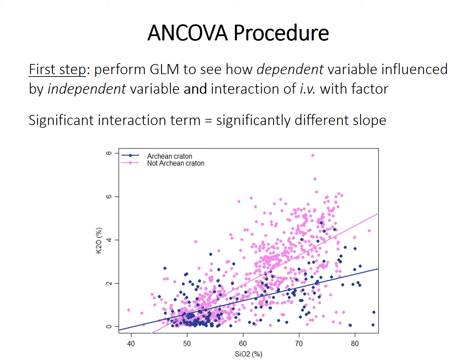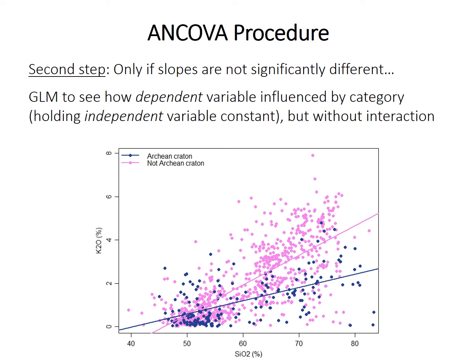The first step in ANCOVA is to test a general linear model (GLM) that includes an interaction term between the independent variable and the factor variable. If that interaction is significant, it indicates a non-additive effect — the slope of the line differs depending on the factor level. If you find a significant interaction, that tells you the slopes differ significantly, and that's as far as you can go. However, if the slopes don't differ significantly, you can test a second model examining how the dependent variable is affected by category (holding the continuous variable constant) and by the continuous variable (holding category constant) — an example of multiple regression.